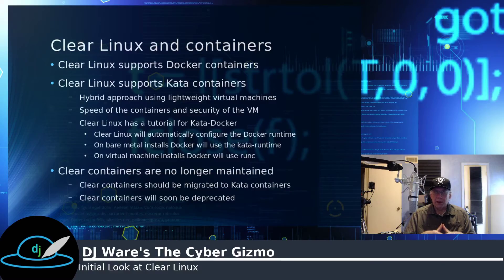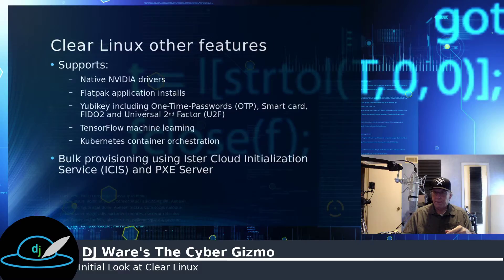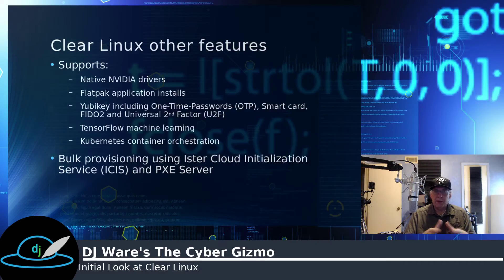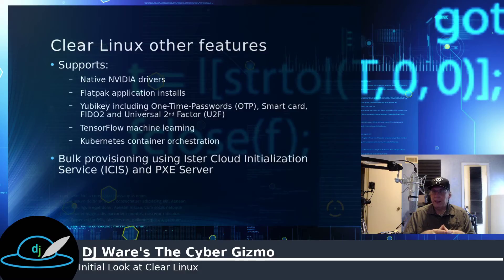There is an older version called Clear Containers — don't use that; it's being deprecated and no longer actively updated. Use Kata containers if you want VM support, or Docker containers if that's all you need. Other features include NVIDIA driver support, Flatpak installs, YubiKey support for MFA or 2FA security, TensorFlow bundles for AI work, and Kubernetes container orchestration in a bundle. There's also bulk provisioning to bare metal through the Ister cloud initialization service and Pixie, allowing you to set up a baseline configuration and mass deploy it to a number of servers all at once.